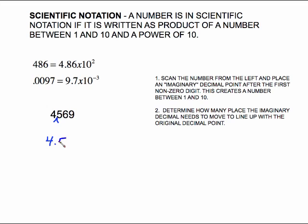So my number between 1 and 10 is 4.569 times 10 to some power. Next, determine how many places the imaginary decimal needs to move to line up with the original decimal point. If there is no decimal showing, it's understood to be at the end of the number. So how many places does my imaginary caret have to move to land on that decimal? It needs to move 1, 2, 3 places. So 4,569 equals 4.569 times 10 to the third in scientific notation.